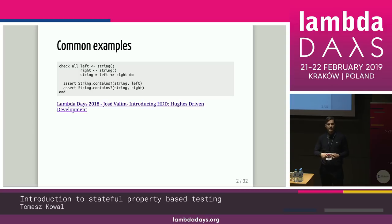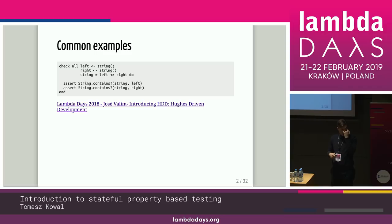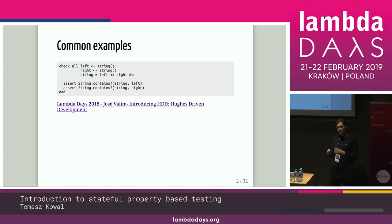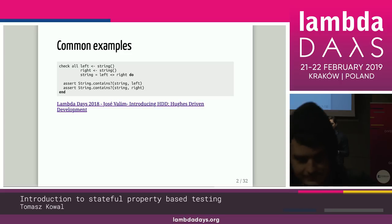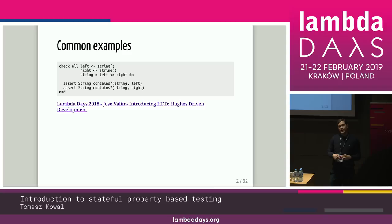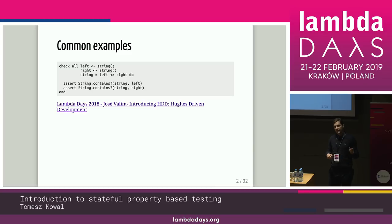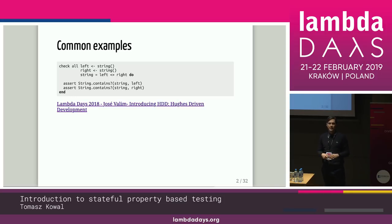The first one was a talk from Lambda Days the previous year by Joseph Wallin, called 'Introducing Hughes Driven Development.' The idea of the talk was that everything John Hughes does is good for creating a programming language. One of the features was that Joseph wanted to introduce property-based testing as a core part of the Elixir language. In the end, he didn't, because property-based testing frameworks are huge beasts with their own trade-offs and don't belong in the core. However, it sparked a discussion about property-based testing.